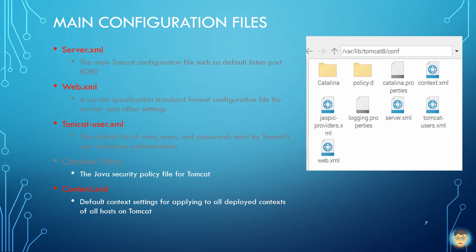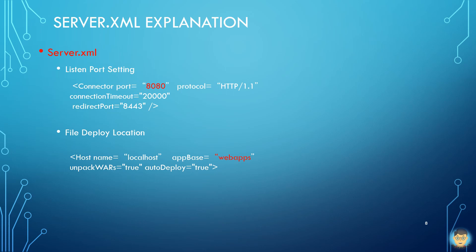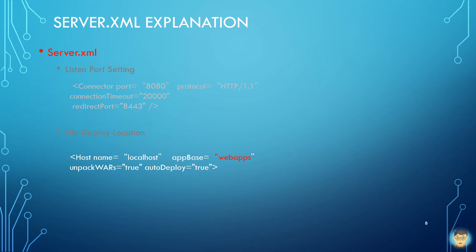The catalina.policy is the Java security policy file for Tomcat server. The context.xml contains default context settings applied to all deployed contexts of all hosts on Tomcat server. In server.xml, two basic settings are highlighted in this video: the Tomcat listen port and web page deploy location.